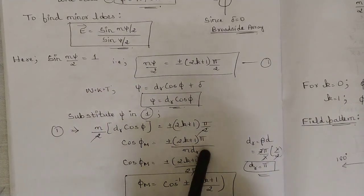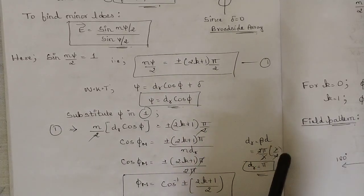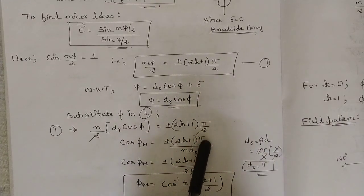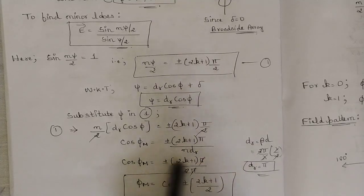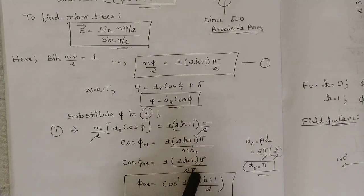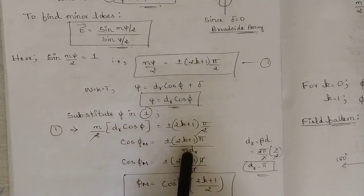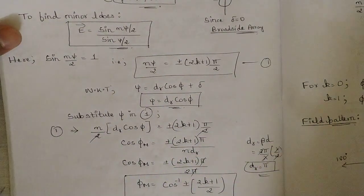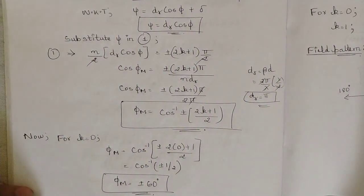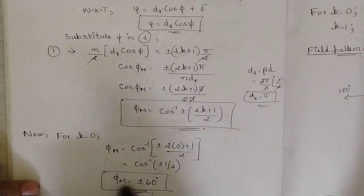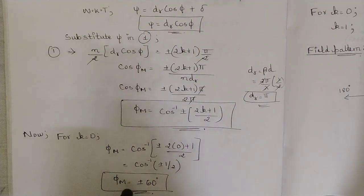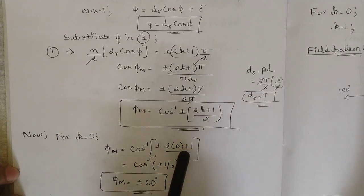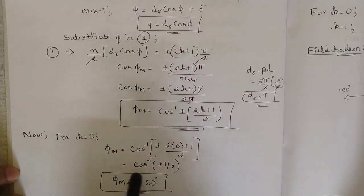The value of d_r = β·d, where β = 2π/λ and d = λ/2, so λ cancels and 2 cancels, giving d_r = π. Substituting: cos(φ_m) = ±(2k+1)π / (n·d_r) = ±(2k+1)π / (2·π), so π cancels and we get φ_m = cos⁻¹[±(2k+1)/2]. Since n = 2, we calculate for two values of k. These maximum phase angles correspond to the minor lobes.